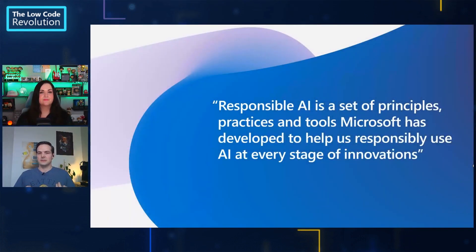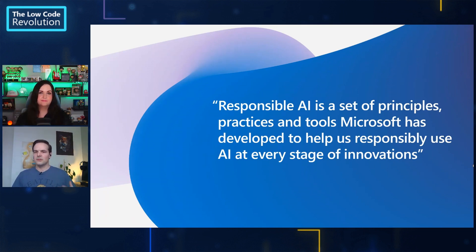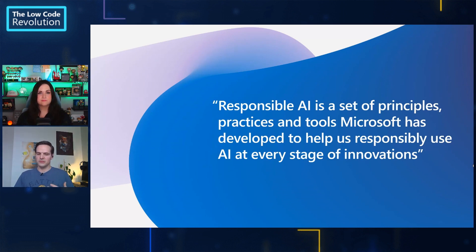This way, we can act to fix, control, or put in place mitigations regarding these limitations. Responsible AI is a set of principles and practices that Microsoft has developed to help us responsibly use AI at every stage of innovation. These are both principles, but also actual tools, libraries, technical code and algorithms we use to make sure that AI behaves as expected. It's also a set of governance practices that we can use in any organization. All teams within Microsoft apply our responsible AI principles, and we encourage our users to also apply these principles to design, develop, and use AI in accordance with their organization's values.